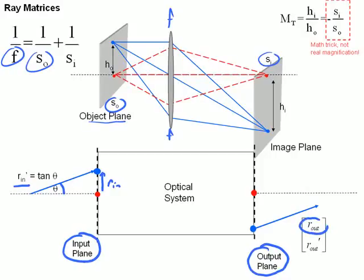In other words, it gives us the output position R out, and it gives us the slope of the ray coming out using a matrix approach.